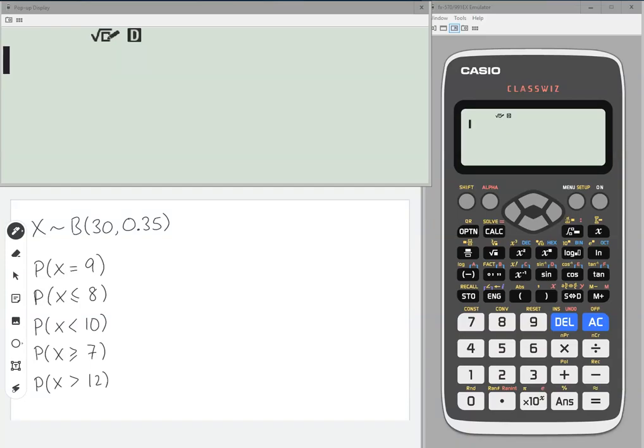In this video, I'm going to show you how to use the binomial PD and binomial CD functions on your calculator. Let's say we want to find each of these probabilities using the binomial distribution with n is 30 and p is 0.35.